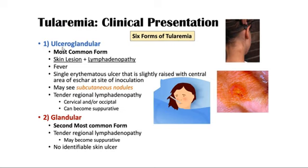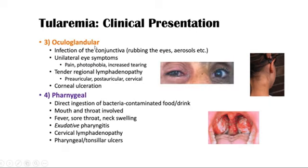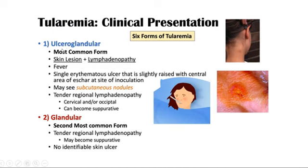In the ulceroglandular form, 'ulcero' means ulcer and 'glandular' means glands. This is the most common form, presenting with skin lesions, lymphadenopathy, and fever. It features a single erythematous ulcer that is slightly raised with a central eschar at the site of inoculation. Subcutaneous nodules may also be seen, along with tender regional lymphadenopathy.